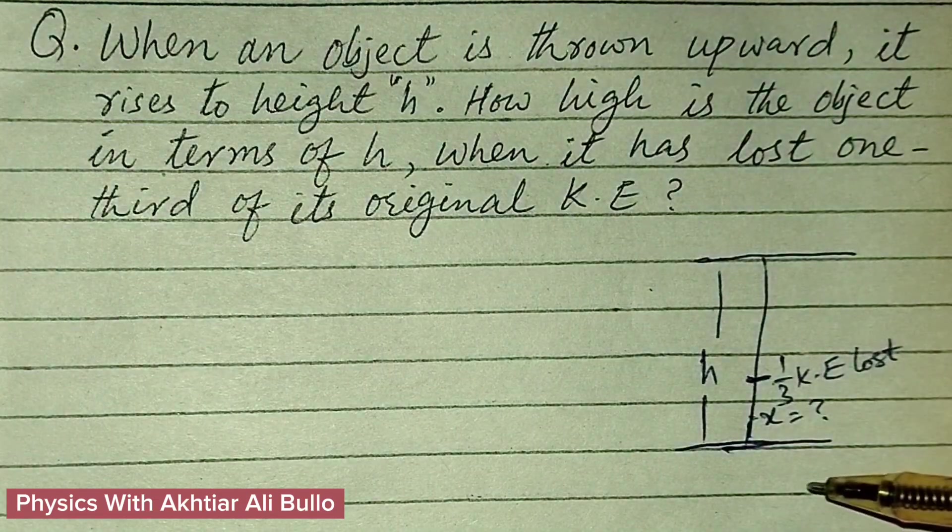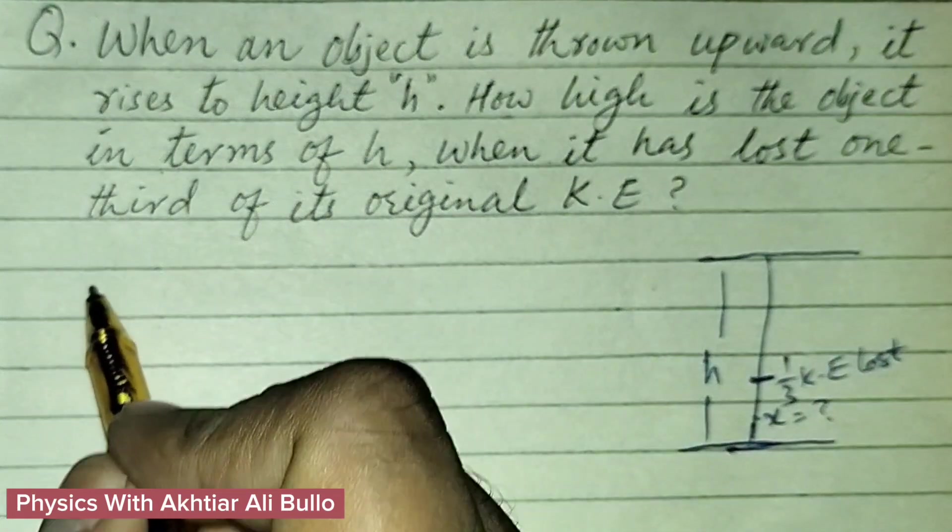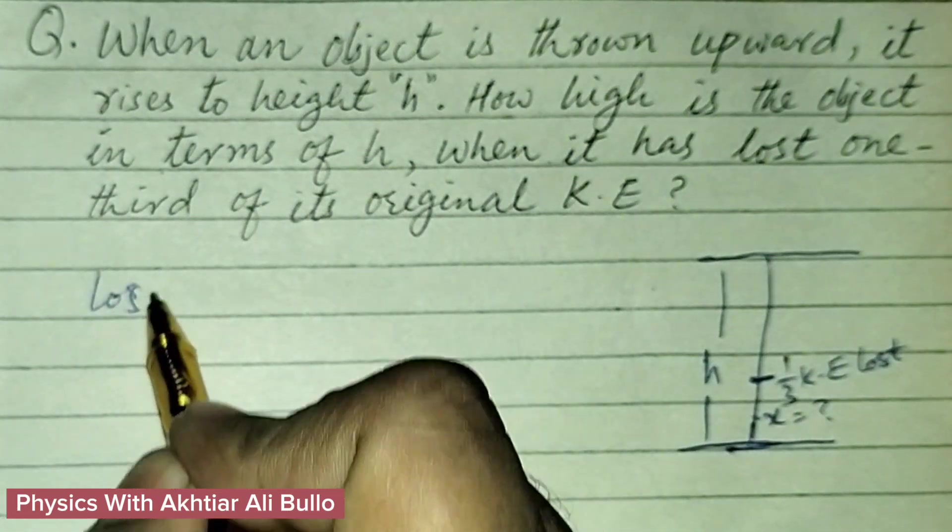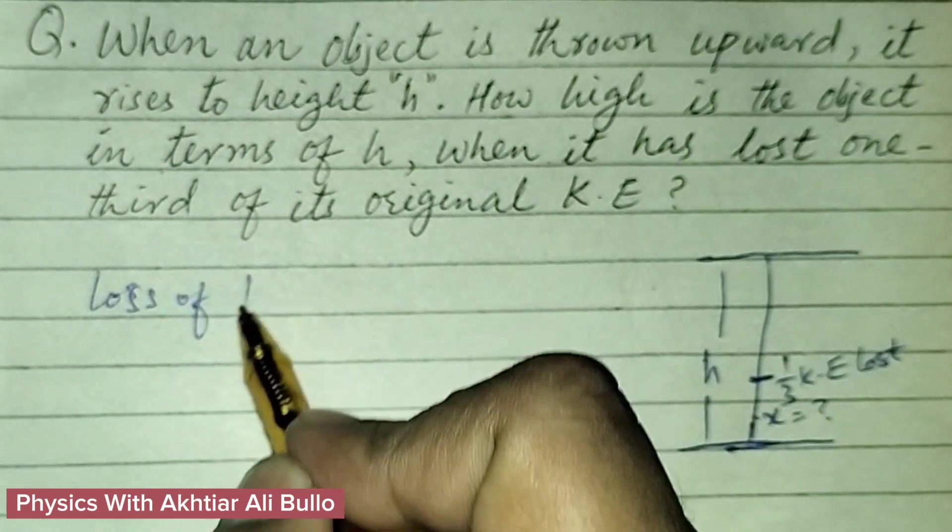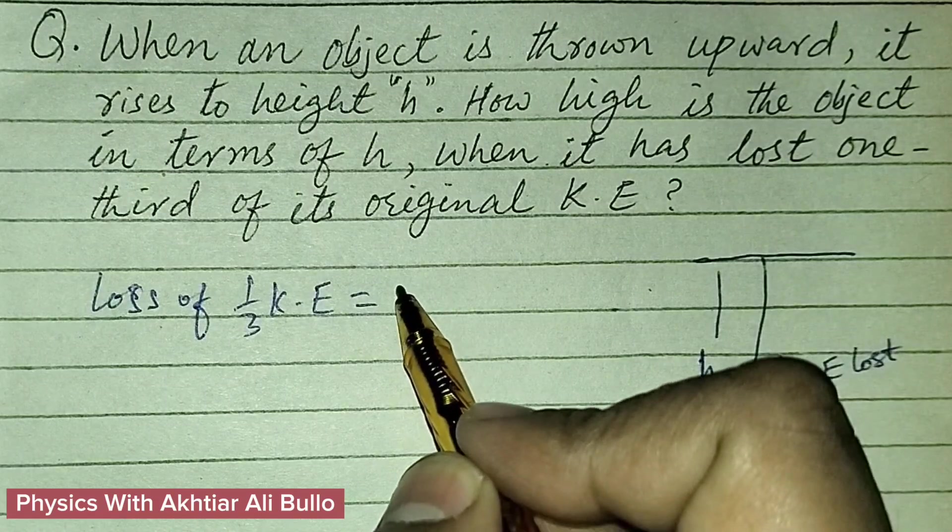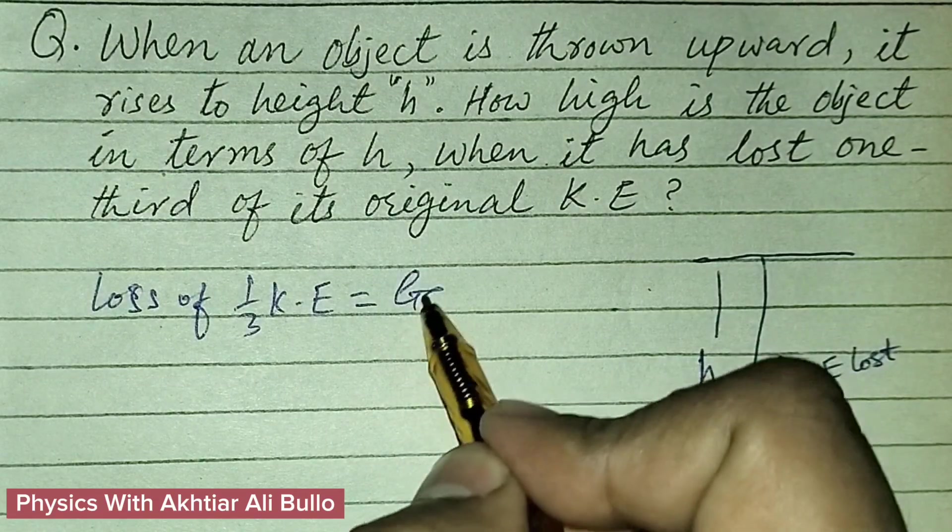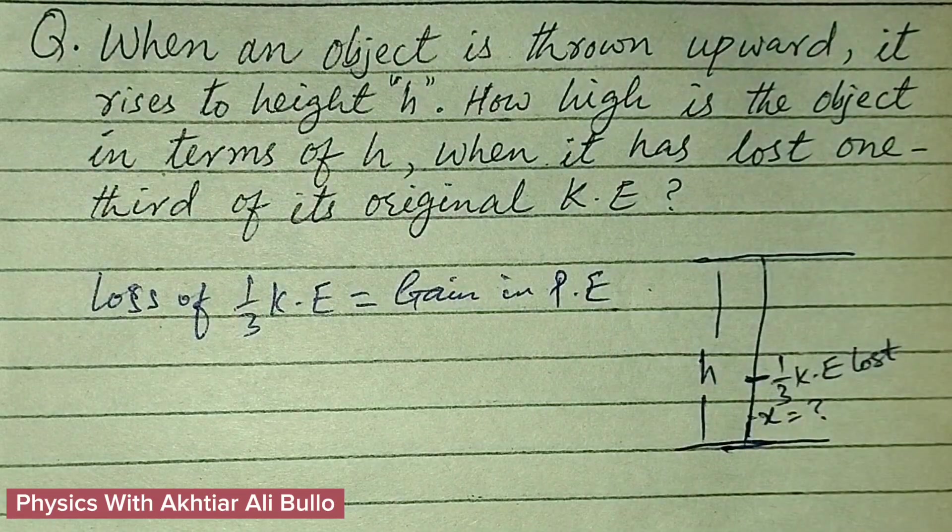When object is thrown upwards, then loss of one-third of kinetic energy is equal to gain in potential energy.